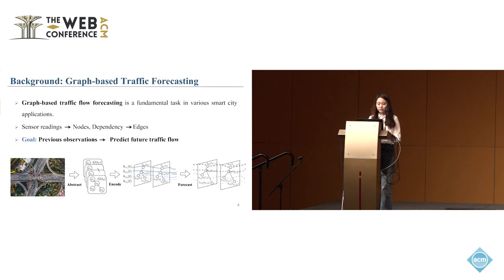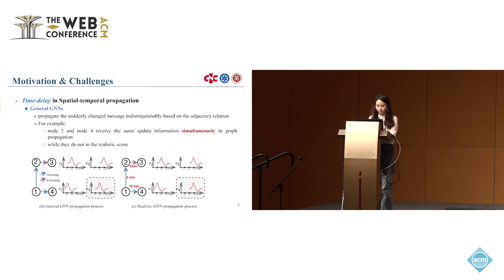Graph-based traffic flow forecasting is a fundamental task in various smart city applications. Its goal is to predict the future traffic flow based on previous traffic observations. In recent years, GNN-based traffic flow forecasting models have been popular backbones. However, general GNNs propagate suddenly changed messages indistinguishably based on adjacency relations.